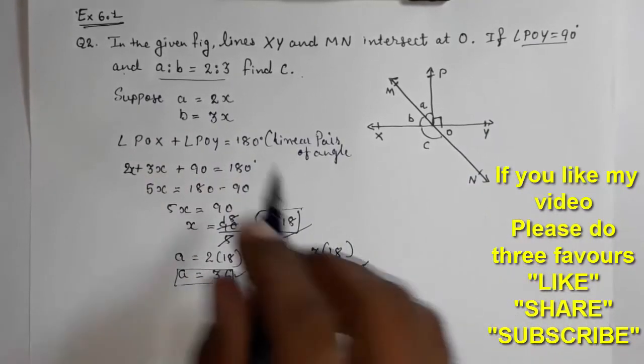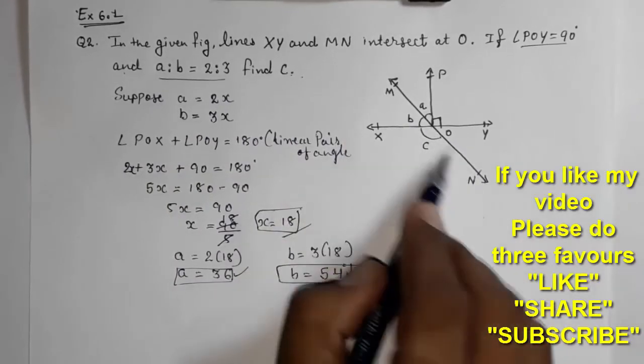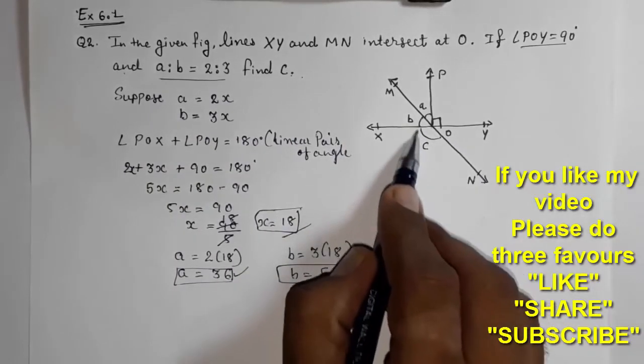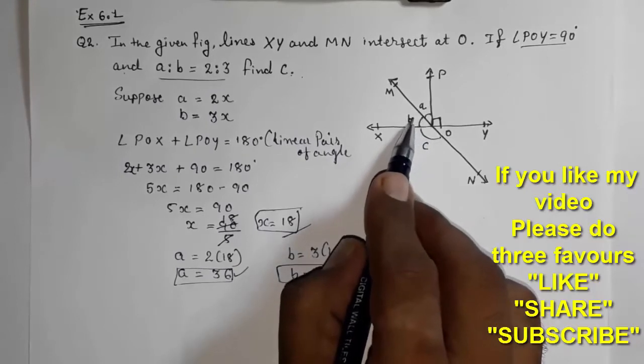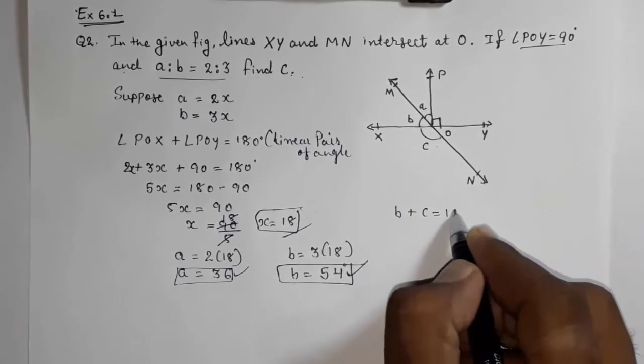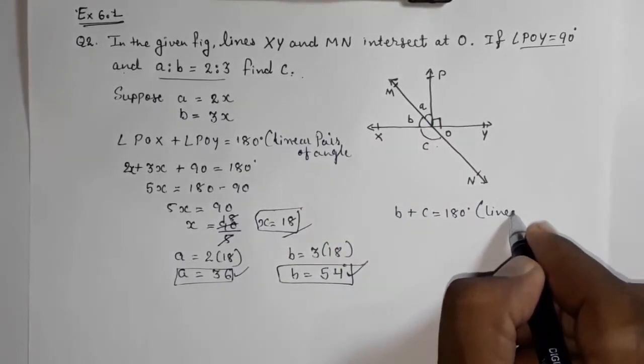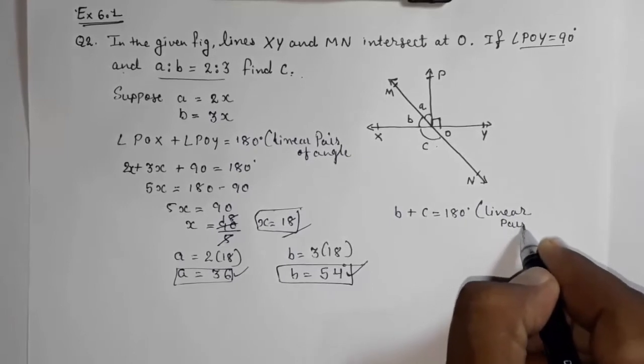Now with the help of b only, we can find out c. How? We know that MON is a straight line, and these two angles are on that straight line, so the sum of these two angles, that is angle b plus angle c, will be equal to 180 degrees again, that is linear pair of angles.